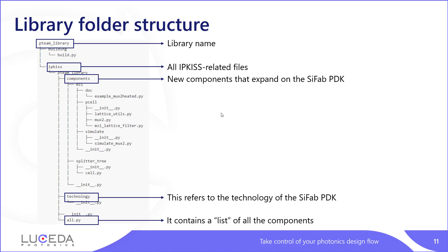The first thing you need to know is how to structure a library. We have a certain folder structure that we adopt for all PDKs and libraries. There is the library name — in this case, P team library — and it contains one folder called ipkiss, in which you add all the IPKISS-related files. Then there is a sub-folder pteam library that will be imported in Python. You add the ipkiss folder to your Python path.